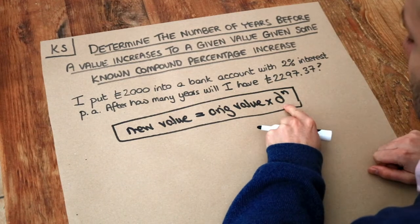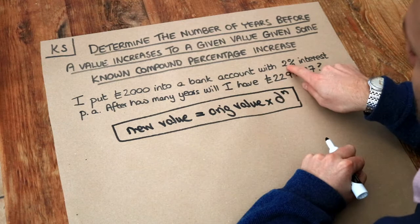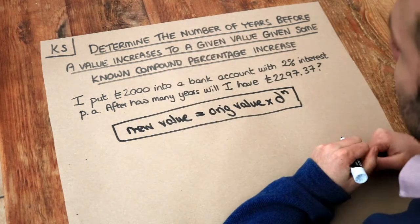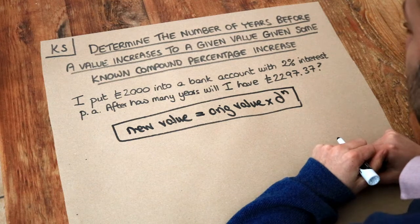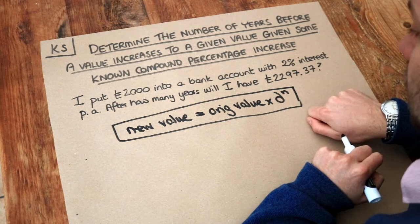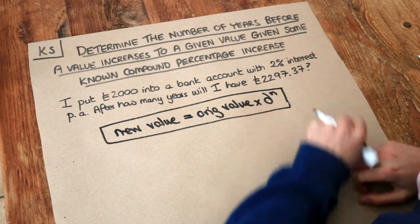So the decimal multiplier, remember, is just a value we times by to represent each year's increase. In this case a 2% rise, because 2% interest means you get 2% interest on the current value of your bank account. And n here is just the number of years that you're applying, which we don't know, because we want to find out after how many years we get that new value.